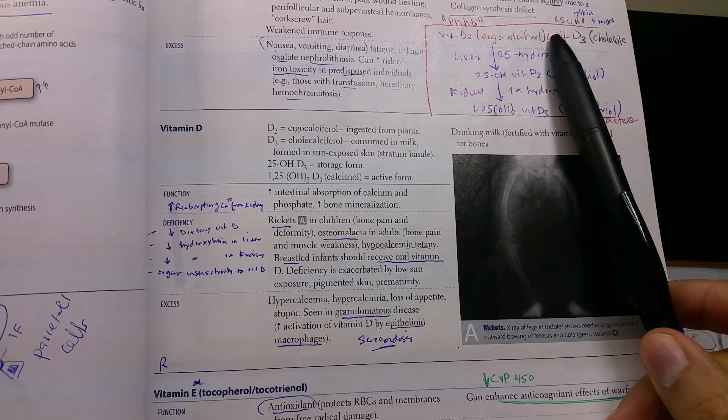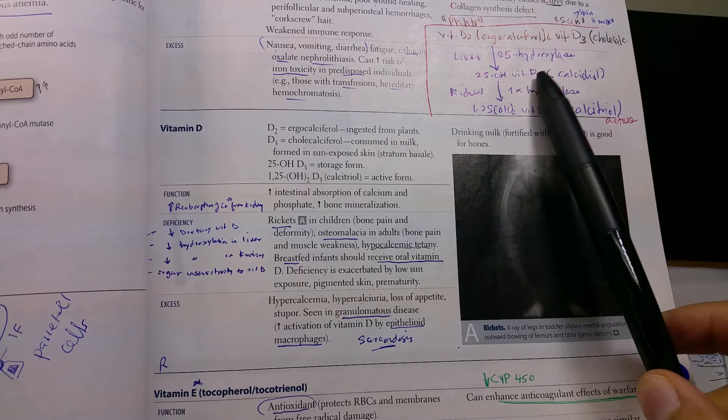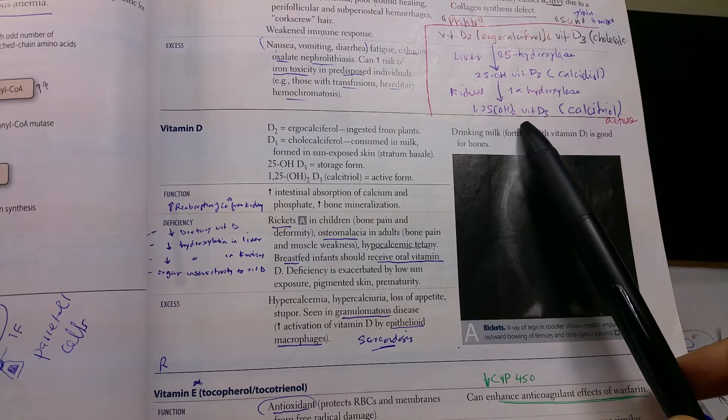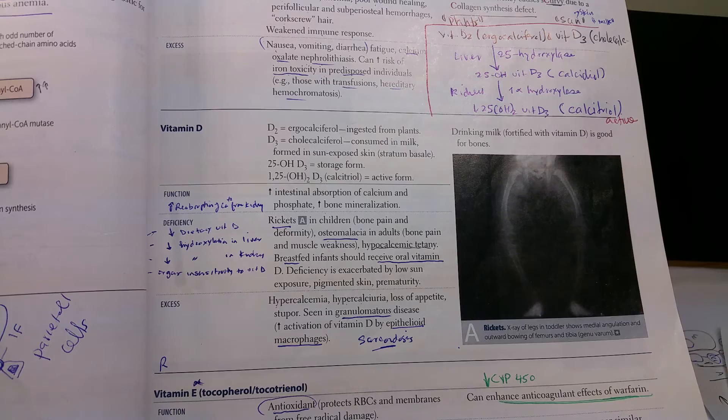Vitamin D is converted by the liver via 25-hydroxylase enzyme into 25-hydroxy vitamin D3, then by the kidney alpha-hydroxylase again into 1,25-dihydroxy vitamin D3, calcitriol, which is the active form.